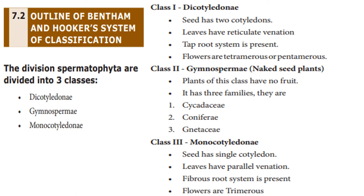Class 3: Monocotyledon. The seed has a single cotyledon. Leaves have parallel venation. Fibrous root system is present. Flowers are trimerous.